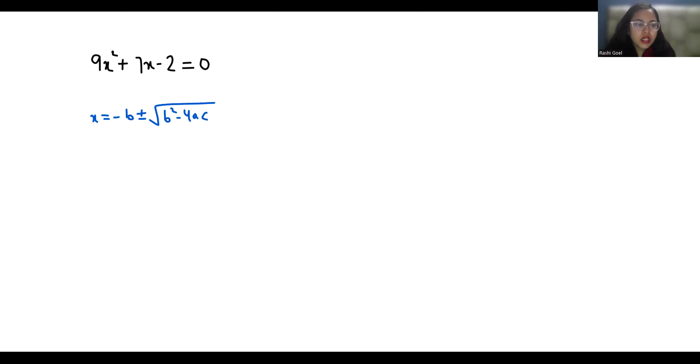This is our standard form of quadratic equation. I'm going to compare it and find the values of a, b, c. So a = 9, b = 7, and c = -2.